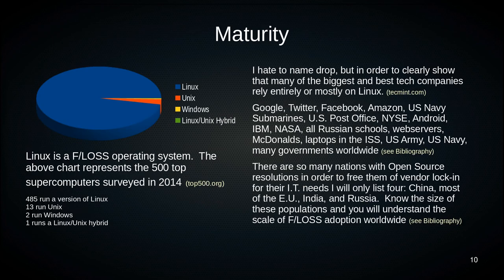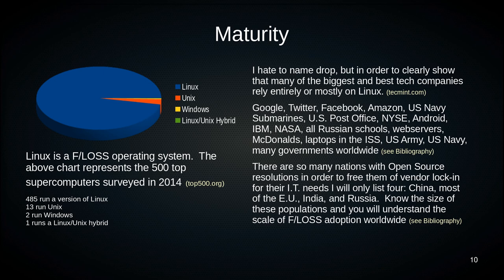Regarding maturity, here's a graph showing the top 500 supercomputers on the planet. Linux runs 485 of them, 13 run Unix — Linux was derived from Unix, it's a completely new operating system using no Unix code but working like Unix. Unix still runs pretty fast but nowhere near as fast as Linux. Two of the top 500 supercomputers run Windows, which is great because just a few years ago they had one — so in five or six years they've doubled their presence. One runs a Unix-Linux hybrid, which is a technically strange thing.